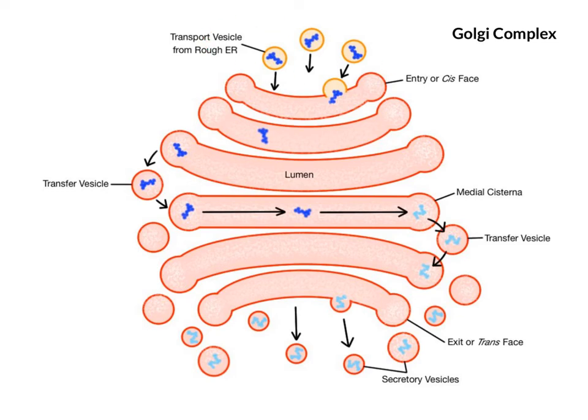The side of the Golgi that is facing the ER is called the entry face or cis face. Cis means it's on the same side as the ER. It is the receiving membrane of the Golgi taking in the various products of protein synthesis from the ER's transport vesicles.